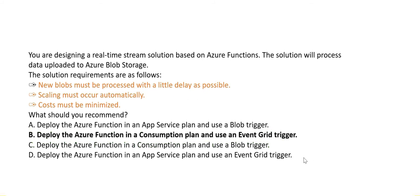Some websites list option C as the answer, but based on the Azure documentation and the justifications — especially the requirement that new blocks must be processed with as little delay as possible — option B with Consumption Plan and Event Grid trigger is the correct answer, as it fulfills all the stated requirements.